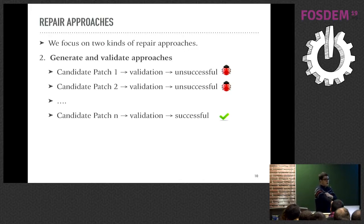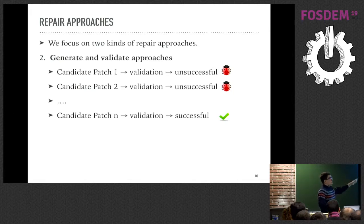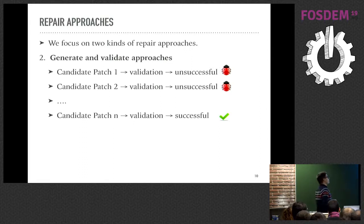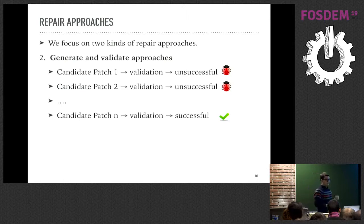The second family is the generate and validate approach. The idea is to generate a candidate patch, validate it, and see whether it passes all the test cases. If not successful, it generates another patch, until it finds a candidate patch that passes all the test cases.